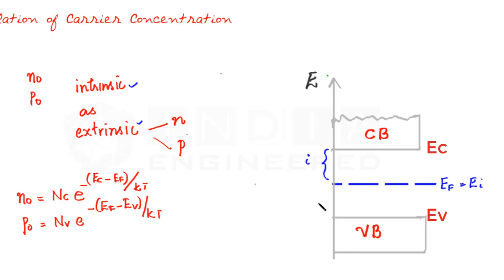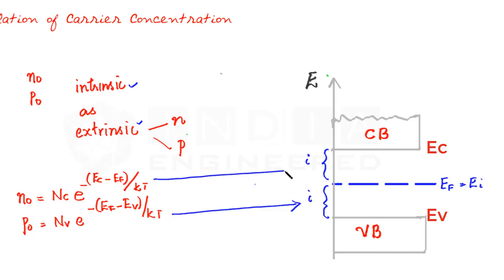What is EF minus EV? That will be this much. So this is for intrinsic material: EF minus EV and EC minus EF.